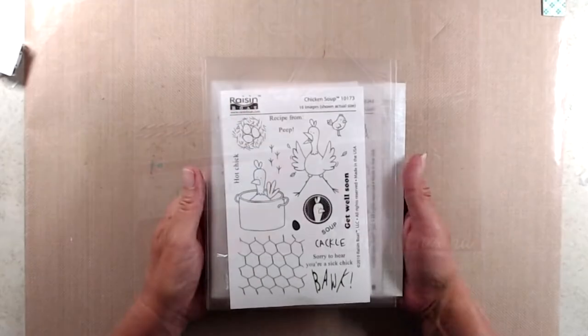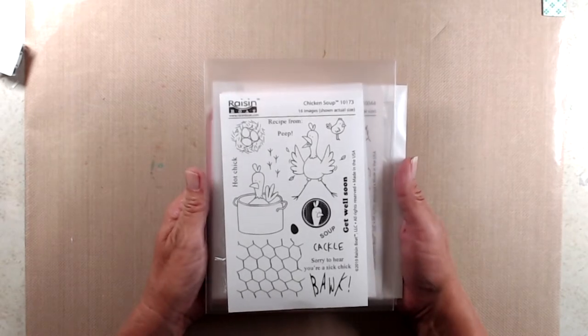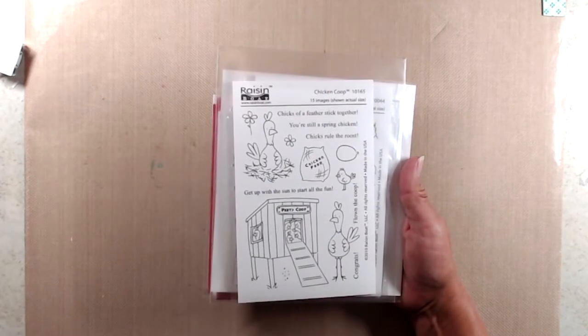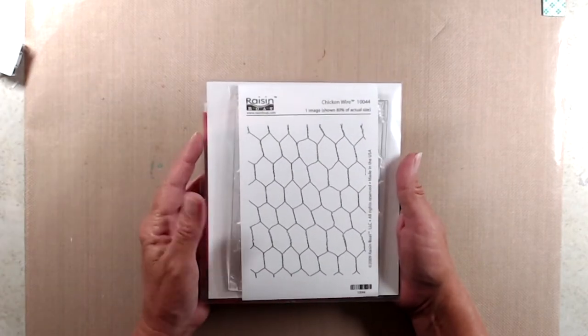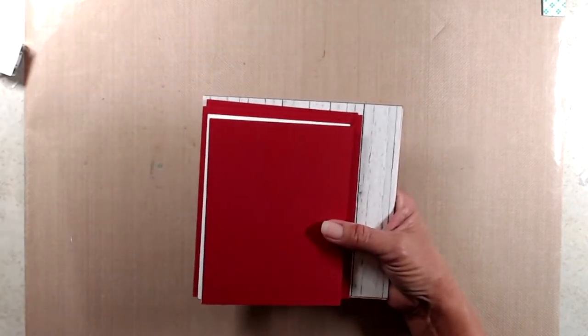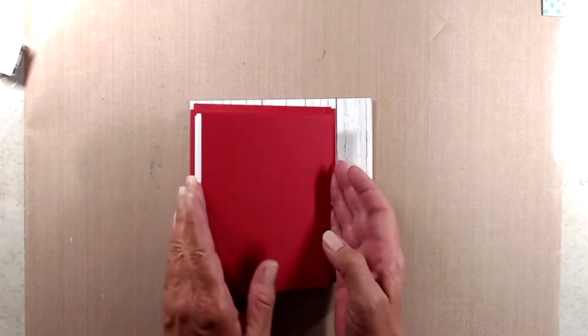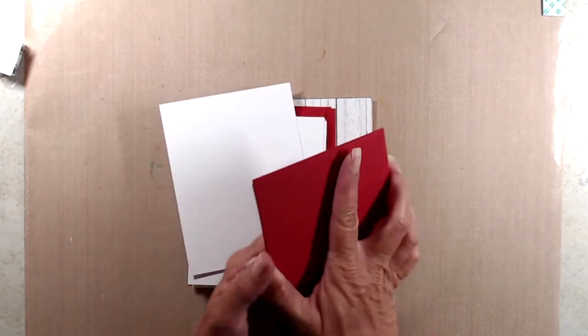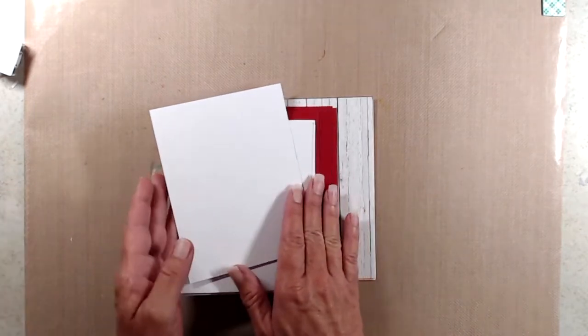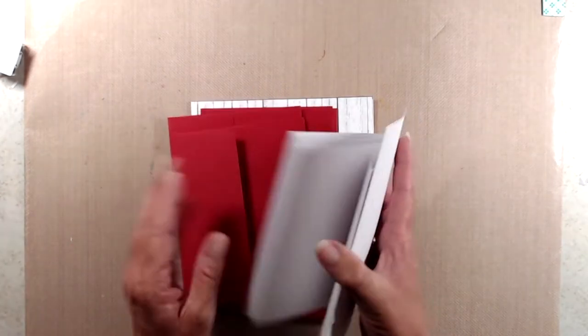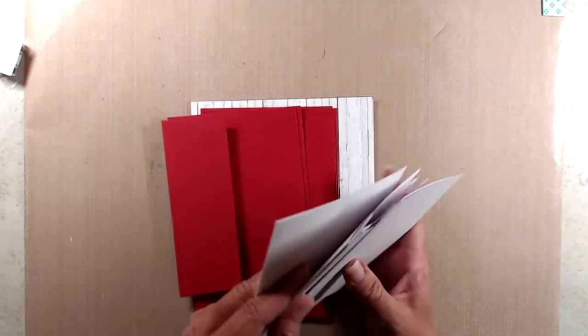I came up with six cards and in the chicken pack you receive the chicken soup stamp set, the chicken coop stamp set, the chicken wire background stamp, six pieces of red cardstock, six white note cards, six red envelopes, and three sheets of six by six woodgrain cardstock in different colors.